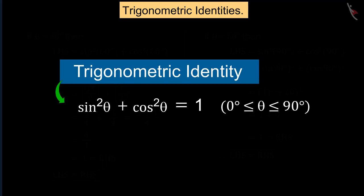Therefore, we can say that this is Trigonometric Identity where theta has a value of 0 degrees to 90 degree angle.